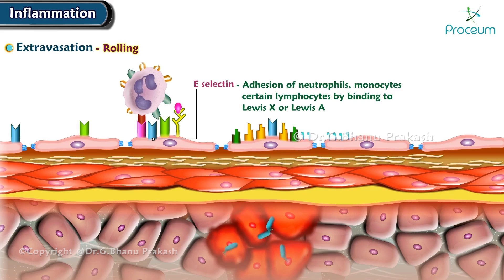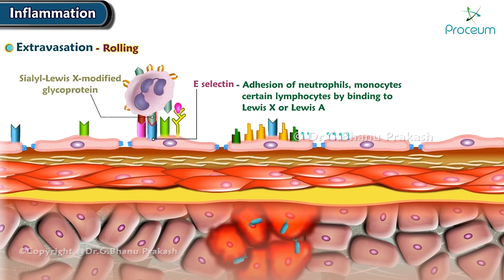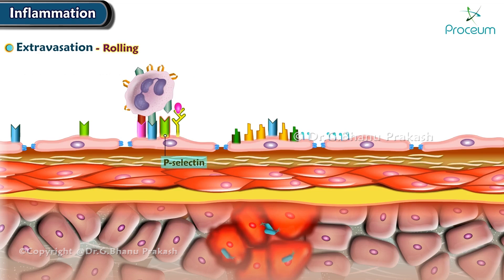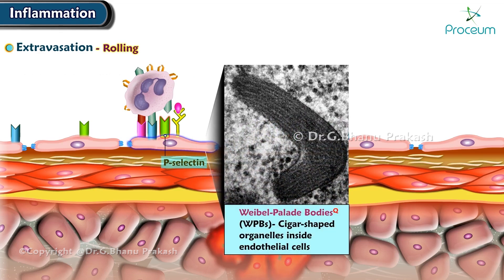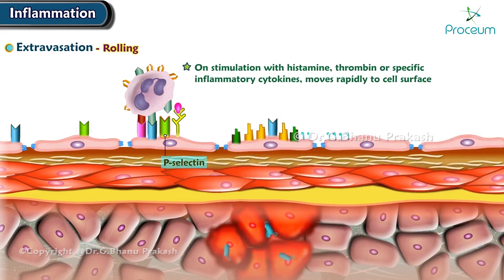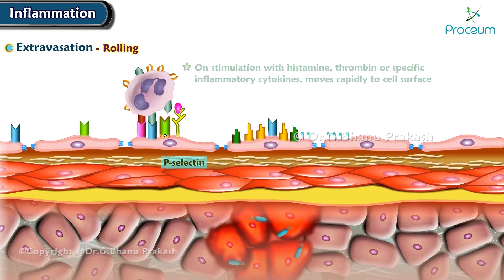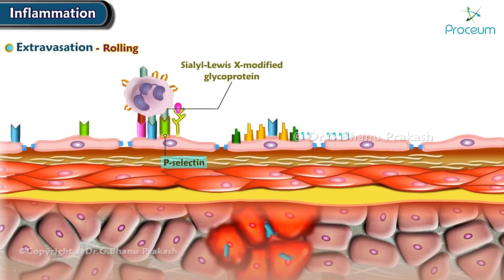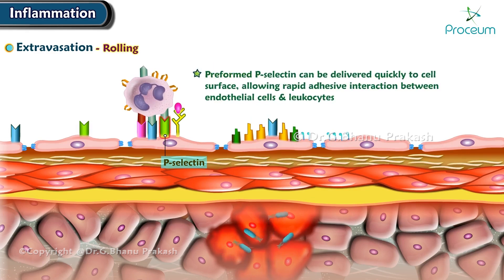E-selectin mediates the adhesion of neutrophils, monocytes, and certain lymphocytes by binding to sialyl-Lewis X or Lewis A. P-selectin is preformed and stored in Weibel-Palade bodies of endothelial cells and alpha granules of platelets. Upon stimulation with histamine, thrombin, or specific inflammatory cytokines, P-selectin moves rapidly to the cell surface, where it binds with sialyl-Lewis X on leukocyte surfaces. Preformed P-selectin can be delivered quickly to the cell surface, allowing rapid adhesive interaction between endothelial cells and leukocytes.